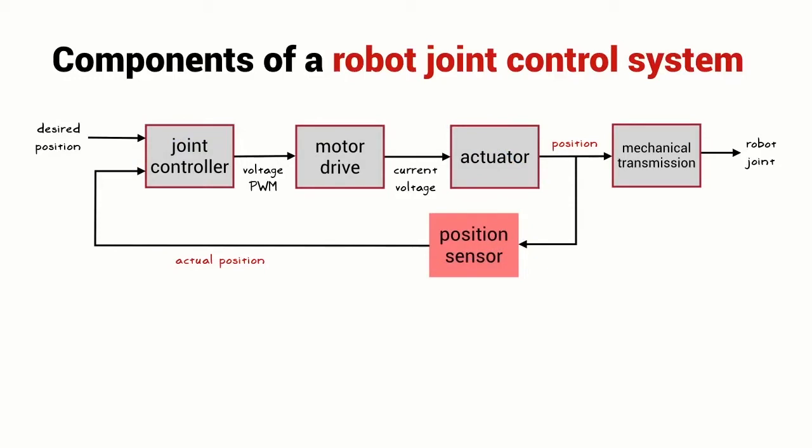We're going to walk through this system and start with the actuator. The actuator is the device that actually makes the robot joint move—it's the motor. The output of the motor is some position, and we have a mechanical transmission which connects the output of the motor to the robot joint itself. The mechanical transmission is commonly a gearbox.